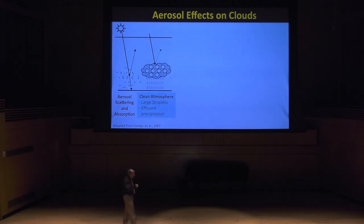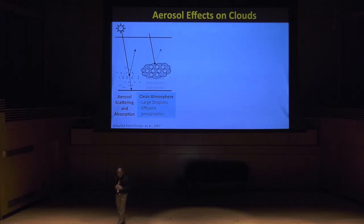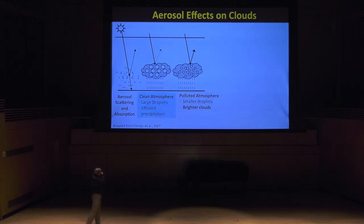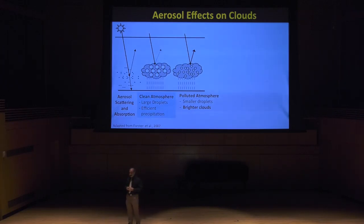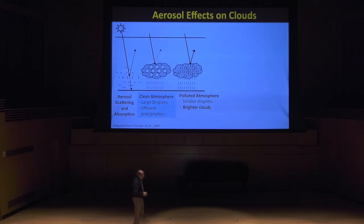Because those particles are essential for cloud formation, they also control cloud properties. In a clean atmosphere with very low particle concentration, cloud droplets form and grow much larger. Large cloud droplets are the first requirement for precipitation — they can grow large enough to rain and fall. But as you add more pollution particles to the atmosphere, you have more particles sharing that water vapor, resulting in clouds with more numerous but much smaller droplets. Smaller droplets reflect more light, contributing to that cooling effect.